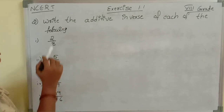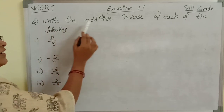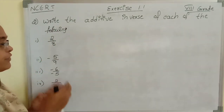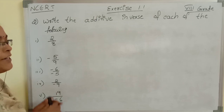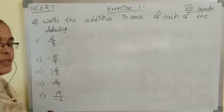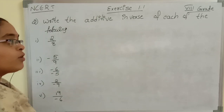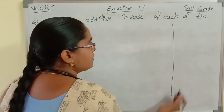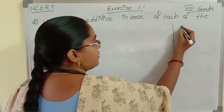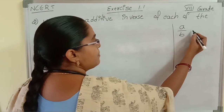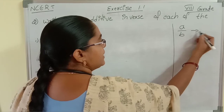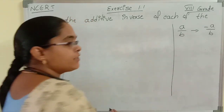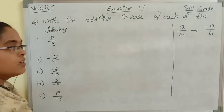Now see the second one: write the additive inverse of each of the following. We need to write the additive inverse of these rational numbers. In the properties, we already discussed what the additive inverse is. If our rational number is a by b, its additive inverse is minus a by b — we need to change the symbol.